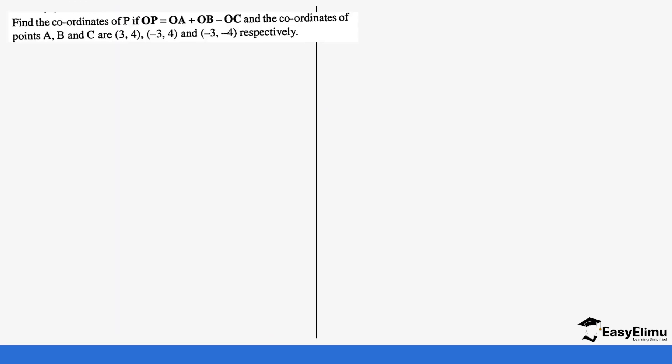So let's look at a few examples of questions that will help us to understand this concept. Find the coordinates of P if you have been given OP equals OA plus OB minus OC. So for us to figure OP, we need to get OA, OB, and OC. We have been given the coordinates of point A is (3, 4), point B is (-3, 4), and point C is (-3, -4).